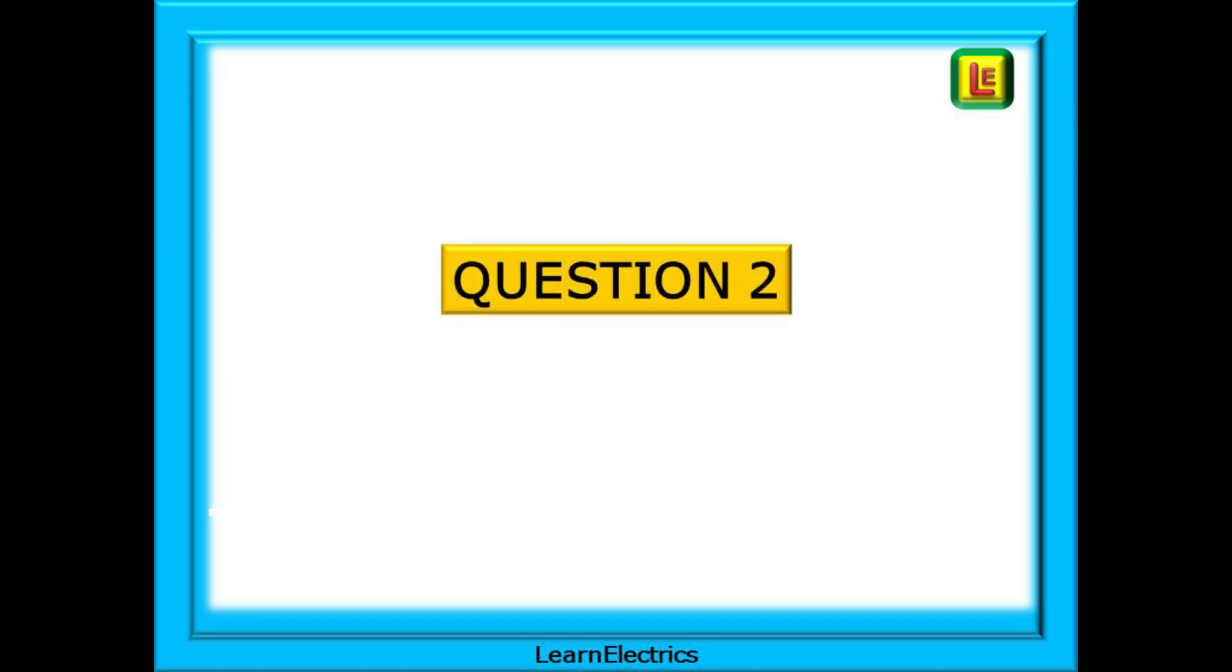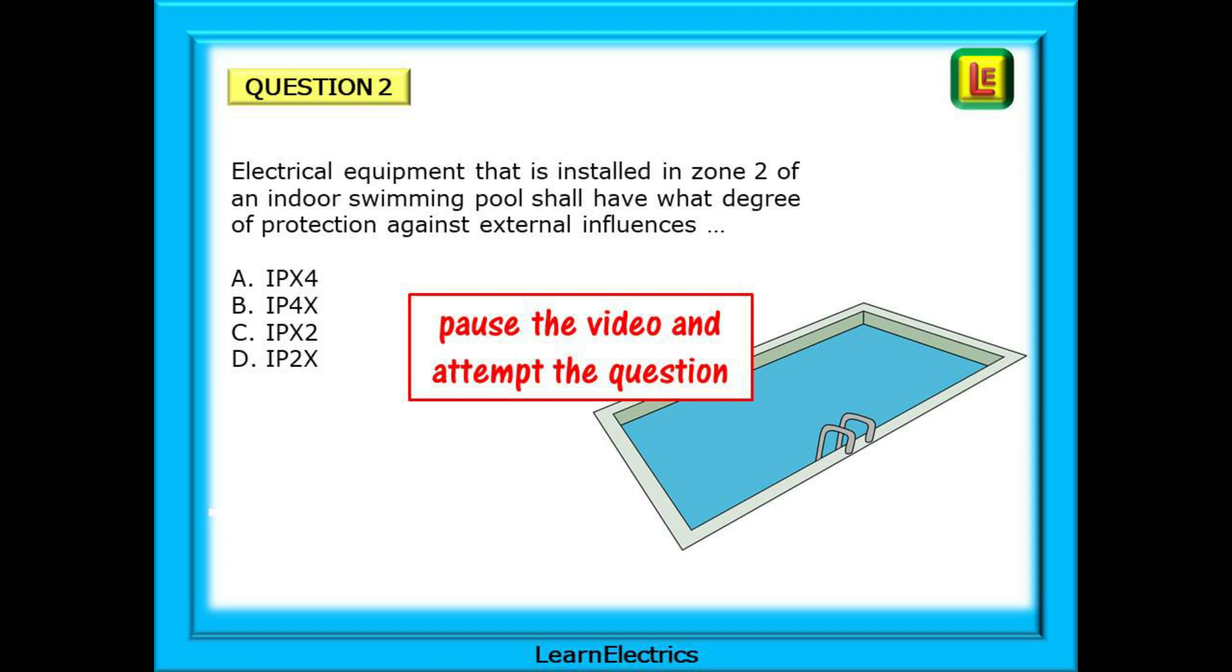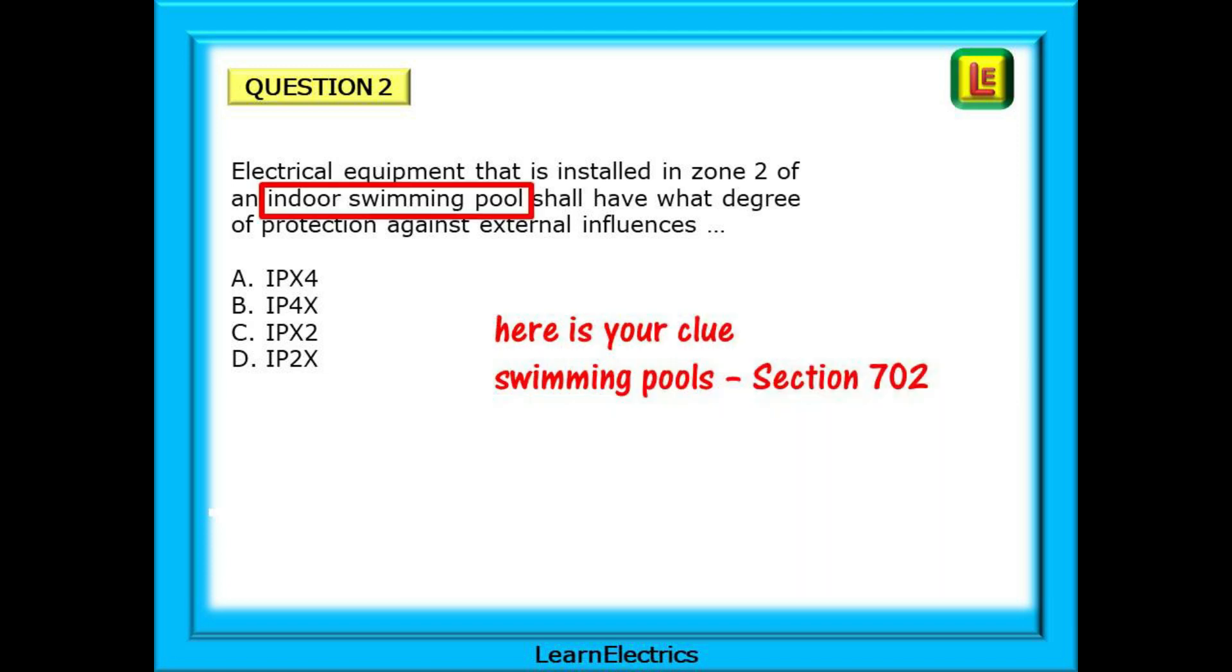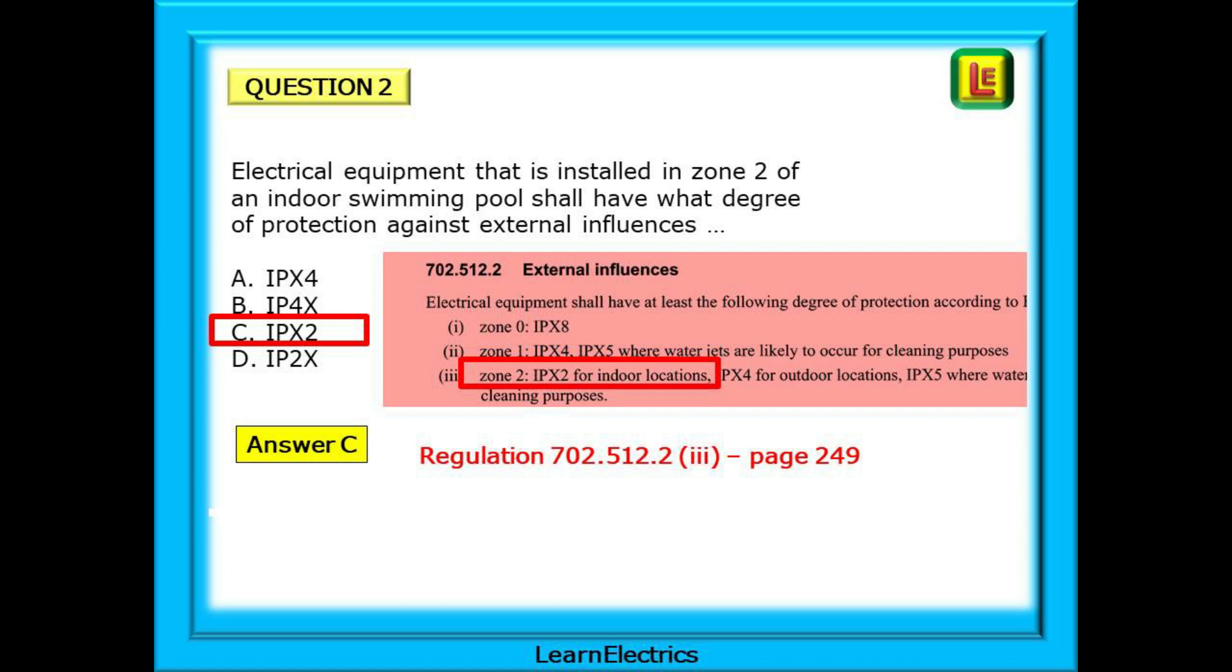Look at question 2 now. Electrical equipment that is installed in zone 2 of an indoor swimming pool shall have what degree of protection against external influences? Pause the video and attempt the question yourself. Here is the clue from the question: Indoor swimming pool. Go to page 3 and find the section for swimming pools, section 702, and go there. In section 702 you will find regulation 702.512.2 indent 3 on page 249. There is your answer for indoor locations: IPX2, Answer C. Make sure you choose the correct answer. IP2X looks similar but it is not right. It must be IPX2.